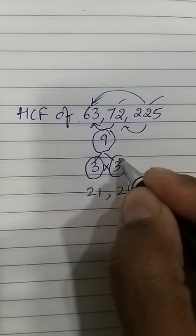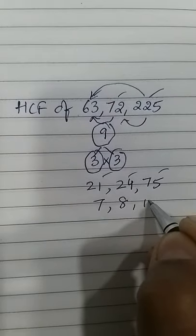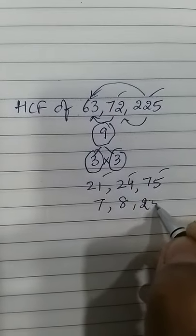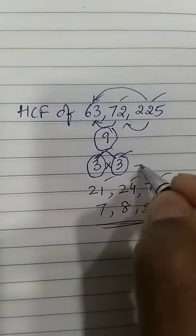What about this 3 now? It divides all 3, getting 7, 8, and 15. Oh, this is 25. Now there is no common factor, so your answer is 3 into 3, which is 9.